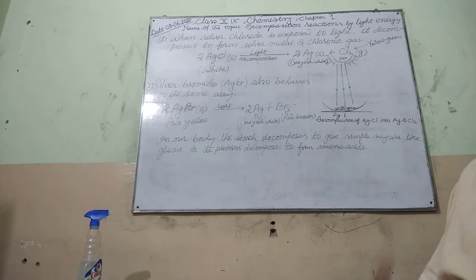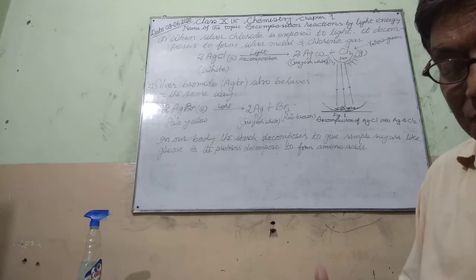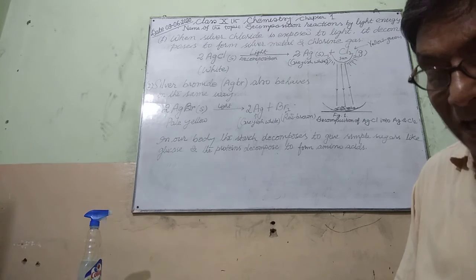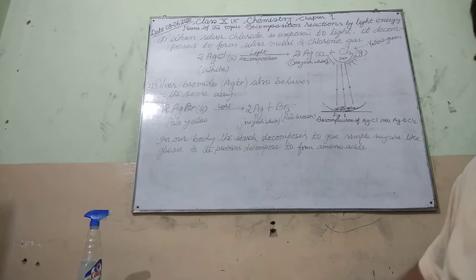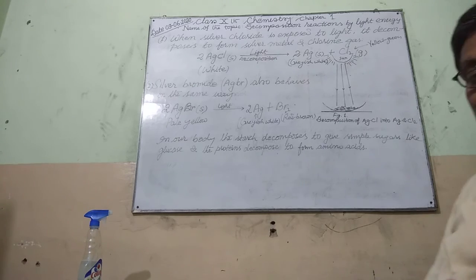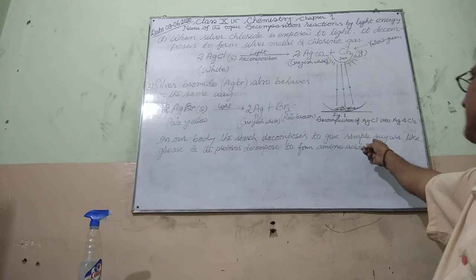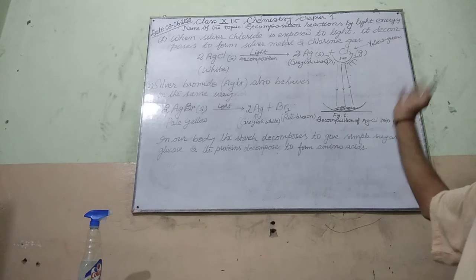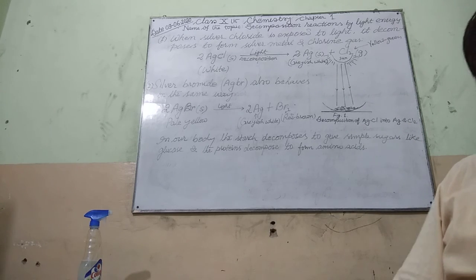When we eat foods like wheat, rice, potatoes, and so many other food items, the starch present in them decomposes to give simple sugars like glucose in the body. The proteins also decompose to form amino acids. In this way, decomposition reactions occur within our body.